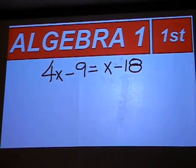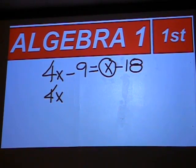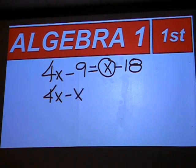4x minus 9 equals x minus 18. Keep your 4x on the left and move this x over with it. It's plus x now, even though there's no plus sign there. Move it across the equal sign and it becomes minus x.